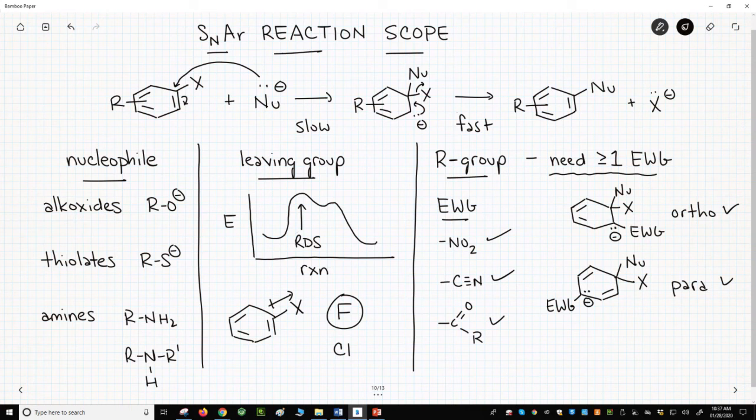By being in these positions, the EWG group is best able to stabilize the negative charge in the intermediate. A meta-electron withdrawing group has almost no effect.